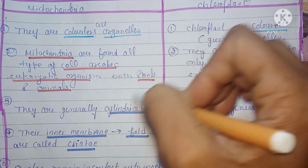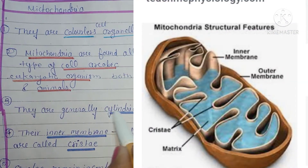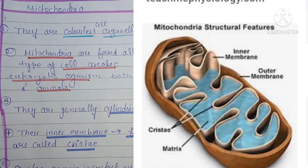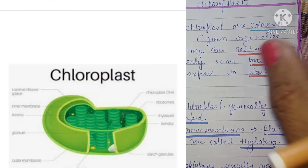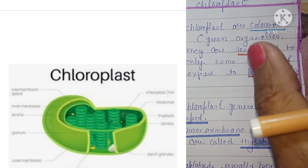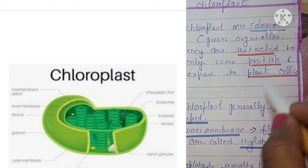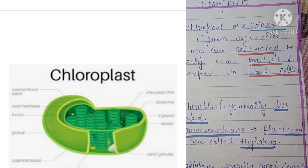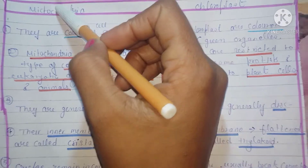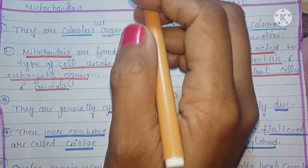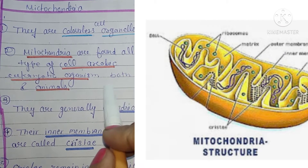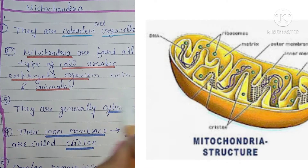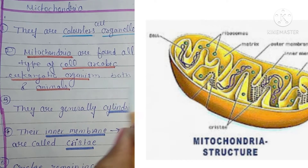Agar hum mitochondria ki surface ki baat kare toh cylindrical outline dekhne ko milta hai, aur agar hum chloroplast ki structure ki baat kare toh disk shape dekhne ko milta hai. Mitochondria ki inner surface ki baat kare toh usmein folding structure dekhne ko milta hai.